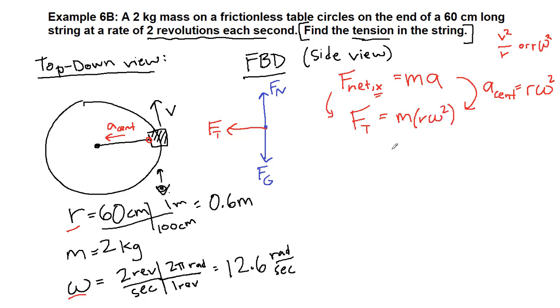We plug in the numbers we have. Mass is 2 kilograms, the radius is 0.6 meters, and omega is 12.6 radians per second, all of that squared. The reason I've written out the units is because I want to make sure we're starting to understand what radians can and cannot do. First, the number value is 2 times 0.6 times 12.6, and the 12.6 only is the part that is squared. We can plug that into our calculators, so we'll get 190 newtons.